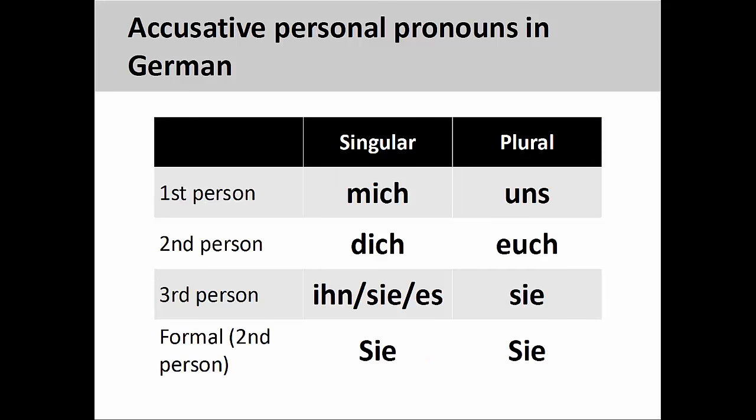As we discussed in an earlier presentation, accusative personal pronouns in German are organized by number, person, and gender. You may wish to review that presentation before continuing with this one.